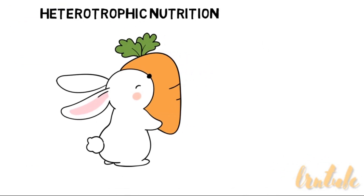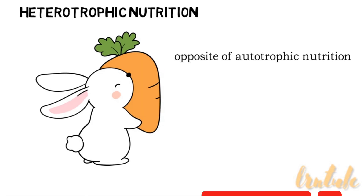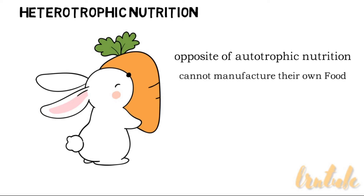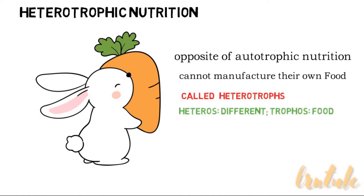Heterotrophic nutrition is the opposite of autotrophic nutrition, as organisms in this group cannot manufacture their own food but depend on autotrophs for their food. They eat already produced food. Organisms which cannot manufacture their own food are called heterotrophs.